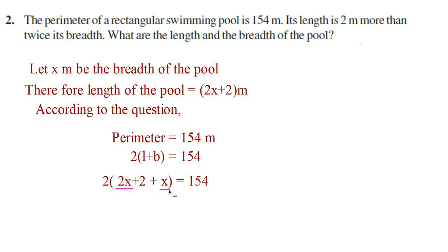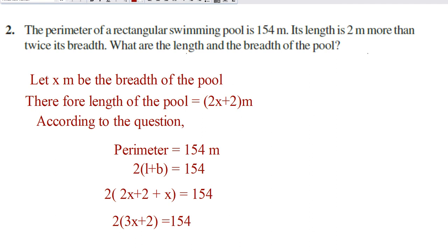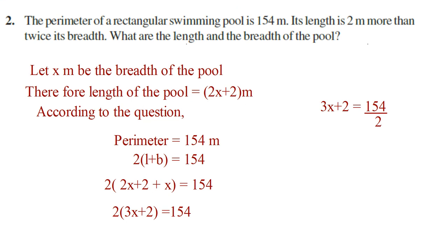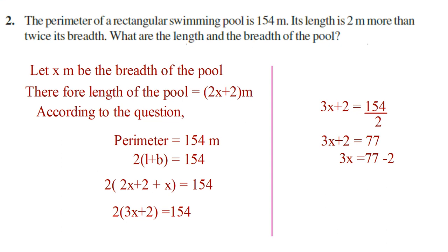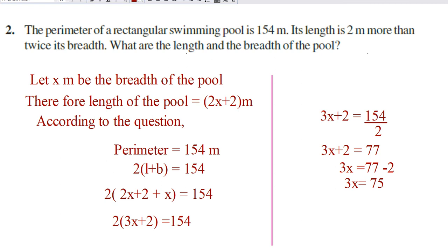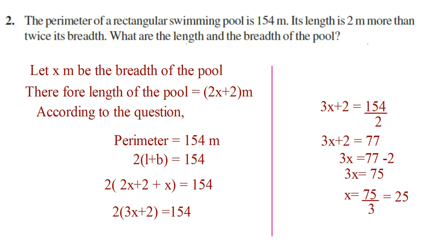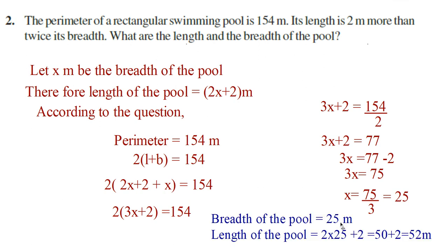What is 2x plus x? It is 3x. So we can write 2 into (3x plus 2) is equal to 154. Transpose 2 to the other side: 3x plus 2 is equal to 154 divided by 2, that is 77. Now transpose plus 2: 3x is equal to 77 minus 2, that is 75. So x is equal to 75/3, which is 25. x is breadth, so breadth of the pool is equal to 25 meters.